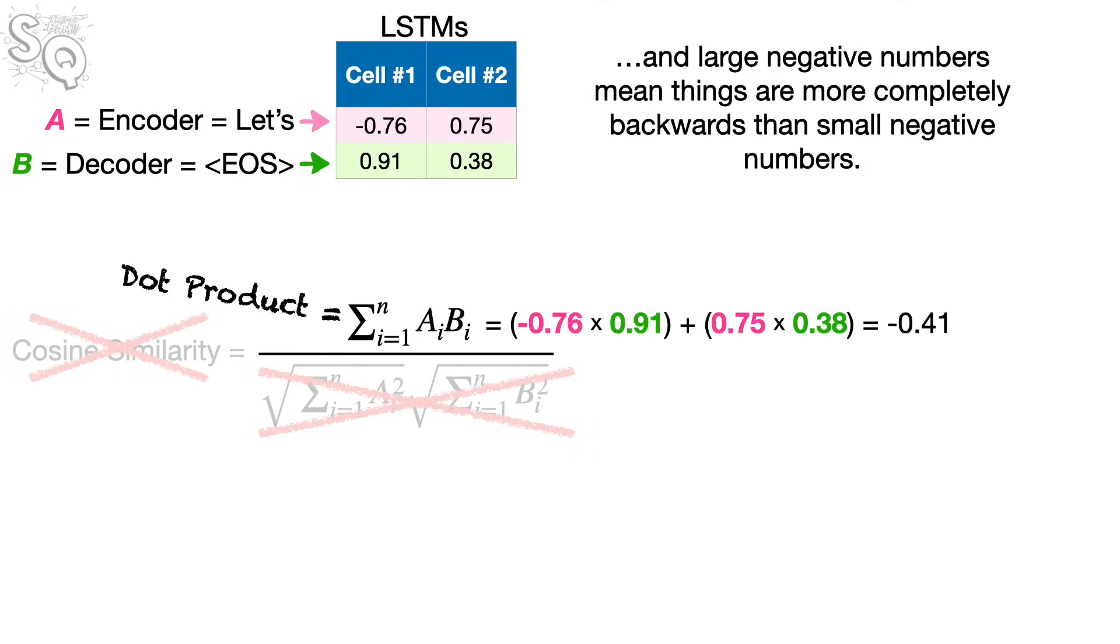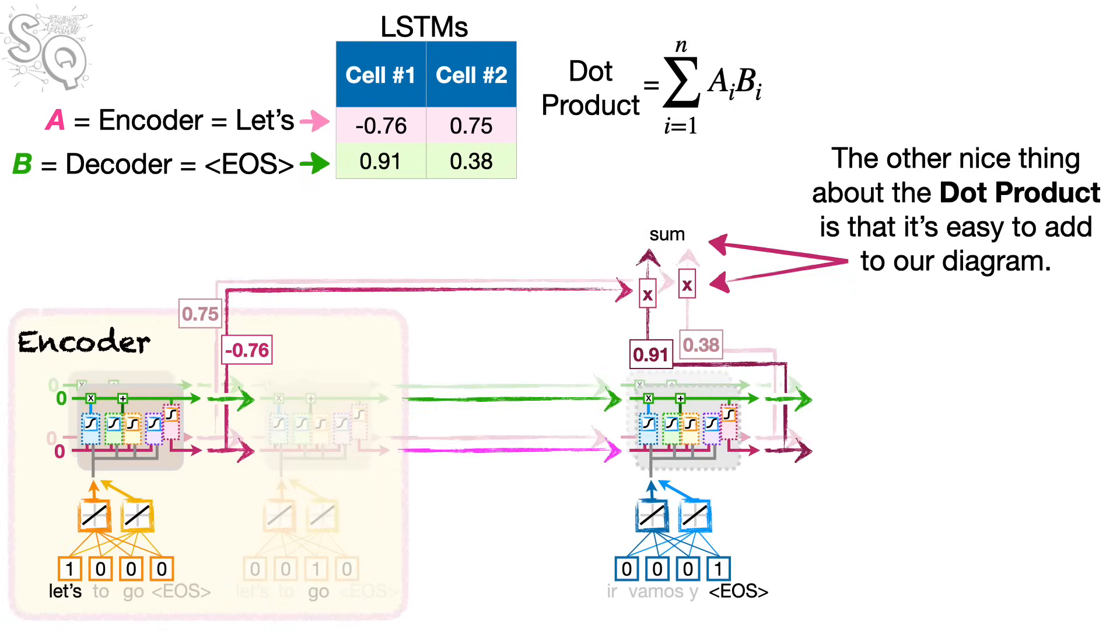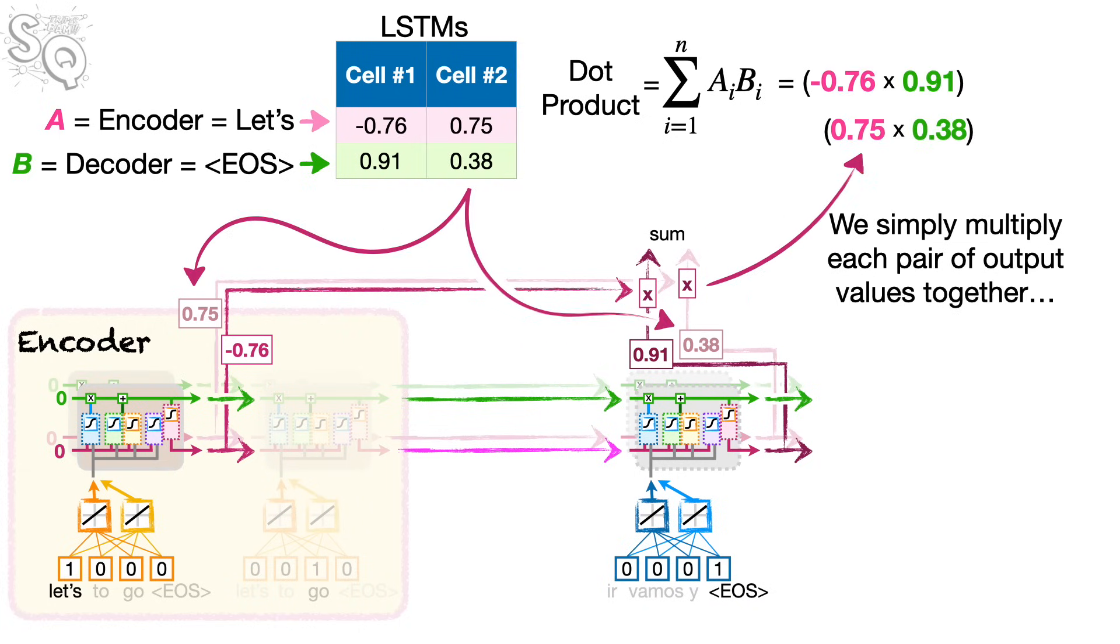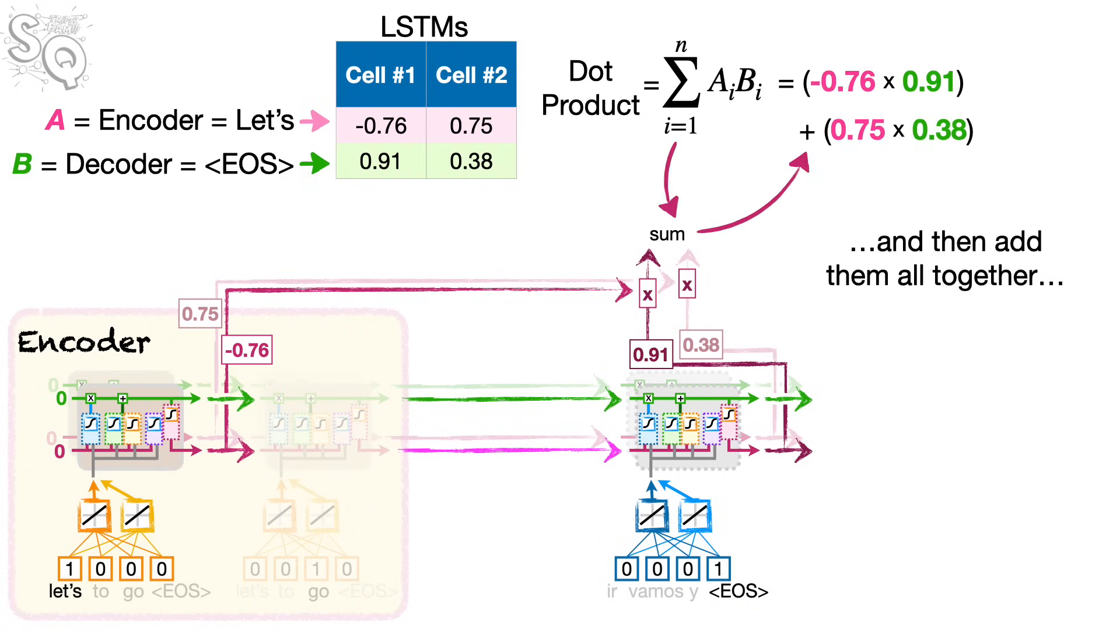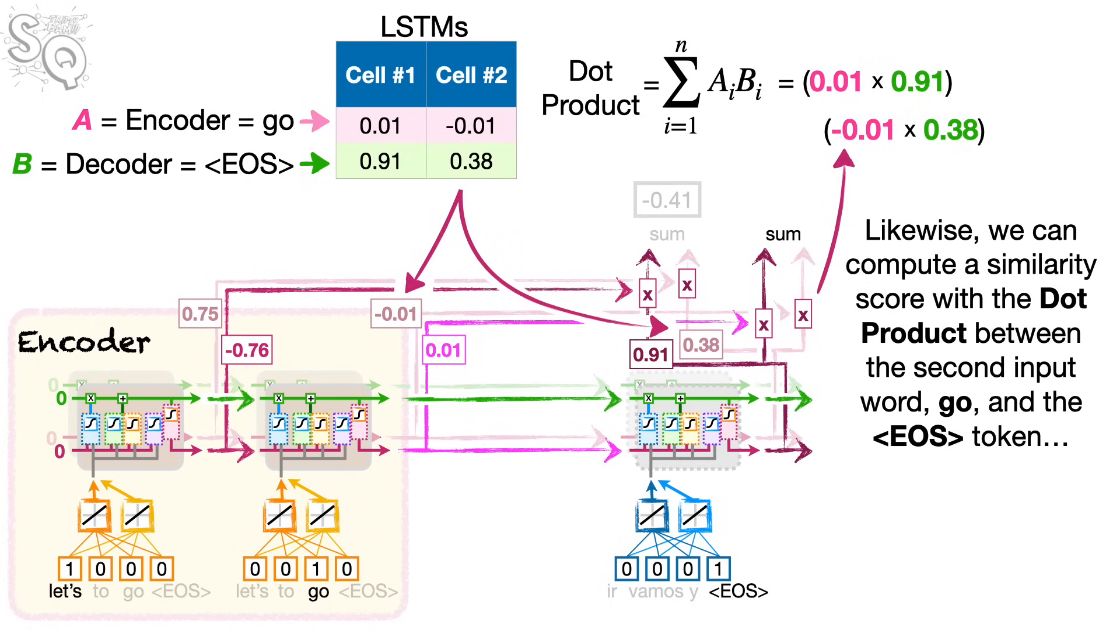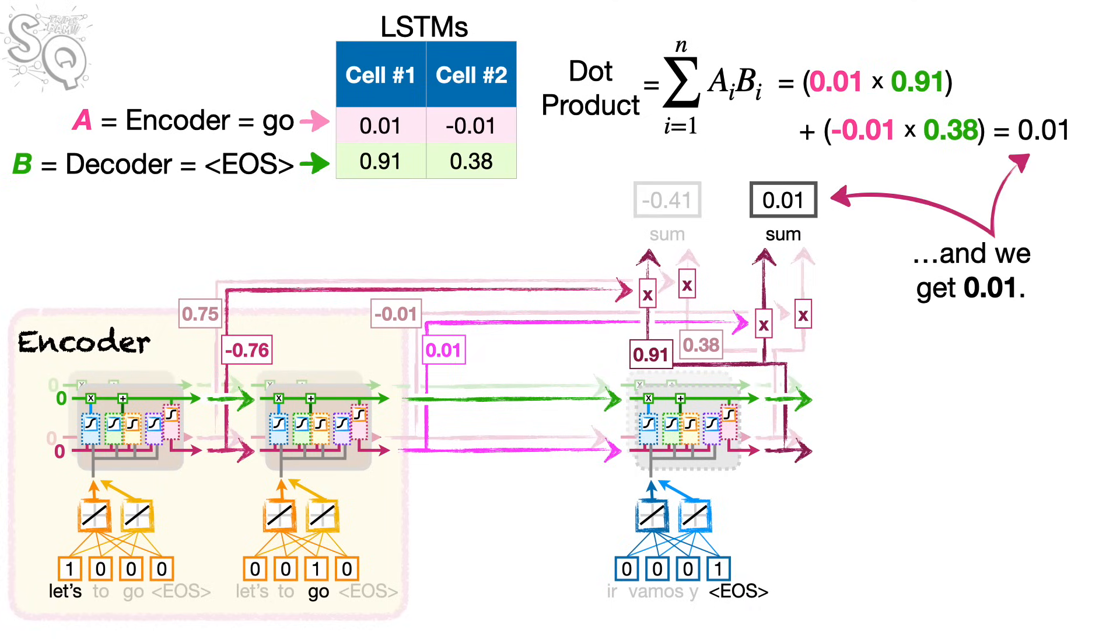The other nice thing about the dot product is that it's easy to add to our diagram. We simply multiply each pair of output values together and then add them all together. And we get negative 0.41. Likewise, we can compute a similarity score with the dot product between the second input word, GO, and the EOS token. And we get 0.01.